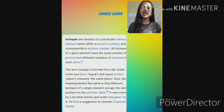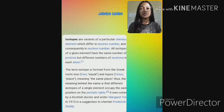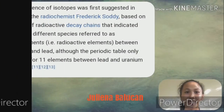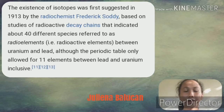Thus, the meaning behind the name is that different isotopes of a single element occupy the same position of the periodic table. It was coined by the Scottish doctor and writer Margaret Todd in 1913. The existence of isotopes was first suggested in 1913 by the radiochemist Ferdinand Sully.